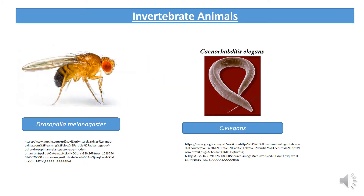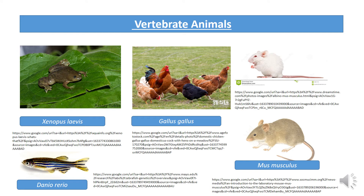Drosophila melanogaster is most often used as a model organism for the study of genetics or gene mutations. For developmental studies or apoptosis studies, C. elegans, the nematode worm, is used. For developmental biology studies, Xenopus laevis frog and chickens — Gallus gallus — are used. For most mammalian studies, the mouse Mus musculus, white mouse or black mouse, is used. Zebrafish Danio rerio is also used for some scientific studies.